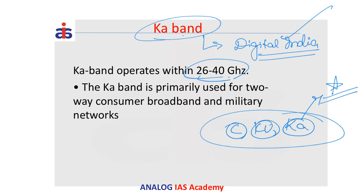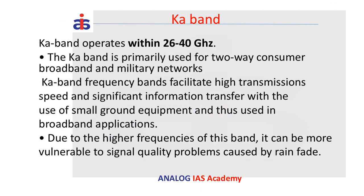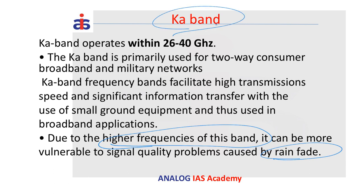The most significant technological development will happen in the Ka-band, and initial results show that progress has already begun. Ka-band is primarily used for two-way consumer broadband — high-speed internet is possible because of satellites placed in Ka-band. Even military networks for communication in areas with poor connectivity rely on Ka-band. However, since Ka-band has higher frequencies, signal quality problems can be caused by weather phenomena like rain — that is its only drawback.